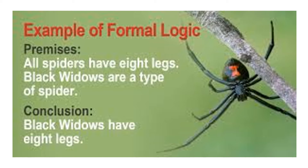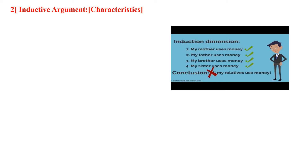Here is an example: All spiders have eight legs. Black widows are a type of spider. Therefore, black widows have eight legs. The two premises are 'all spiders have eight legs' and 'black widows are a type of spider.' The conclusion is 'black widows have eight legs.'